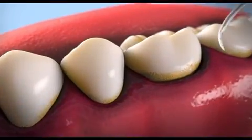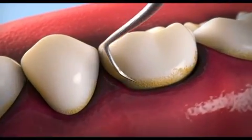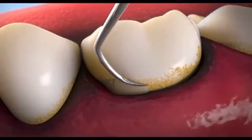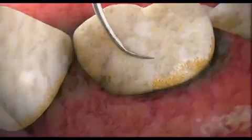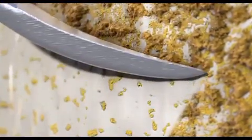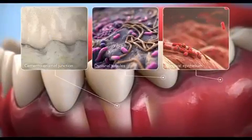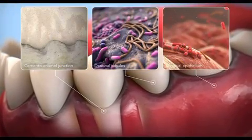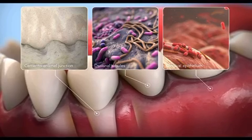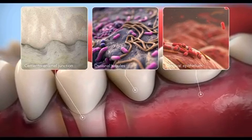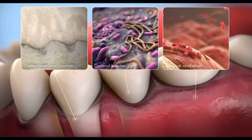Scaling and root planing, SRP, is a cornerstone of periodontal therapy. However, the microanatomy of the teeth provides many nooks and crannies where bacteria can evade even the most skilled dental professionals, due to the limitations of their instruments.